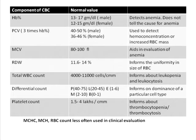You can see the normal values of the components of complete blood count which I have described. Hemoglobin primarily detects anemia, and the normal range is slightly lesser for females in view of the physiological blood loss and the continuous process of red cell turnover which is higher in women, but it does not tell about the cause of anemia.